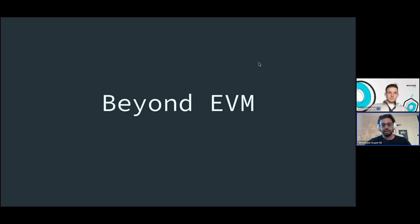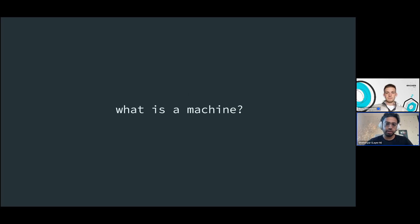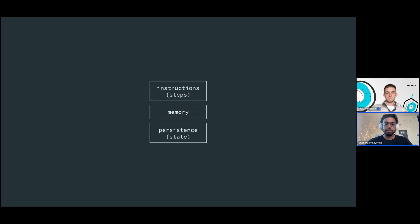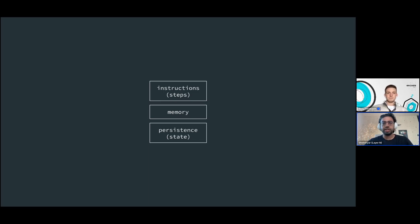You model the entirety of the blockchain as one big machine. We say virtual because it's a machine that runs within other physical machines. Generally we divide machines into three parts: instructions — the steps that the machine executes for a given program; memory — the working set or current stuff the program is operating on; and persistence — for example if you're running an order book, you want to store the state of the order book between operations.